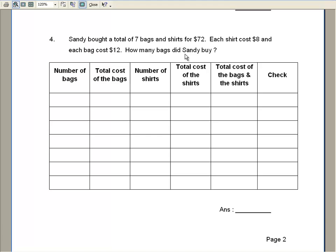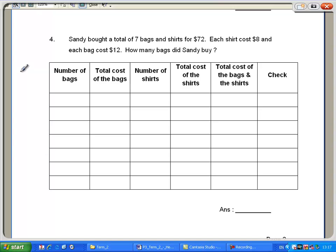Let's do a guess and check. So we guess the number of bags, how much they cost, the number of shirts, how much they cost. Add up the total cost. The total cost is $72. Then we have gotten the correct guess.